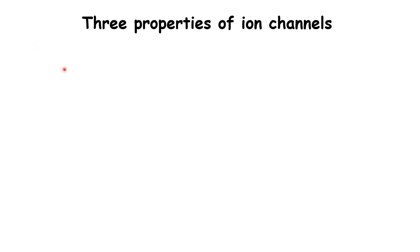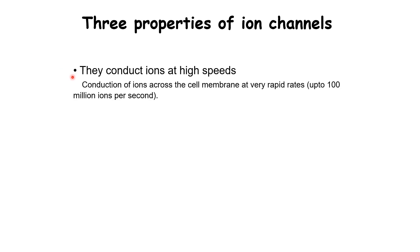Let's look at some of the properties of ion channels. The first property is that the channels allow ions to move at very high speeds. A single ion channel molecule may allow up to 100 million ions per second to pass — a staggeringly large number, and much larger than what an active transporter like the sodium-potassium exchange pump can allow.